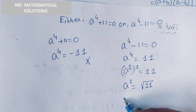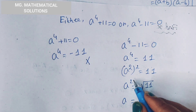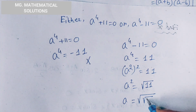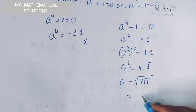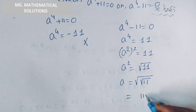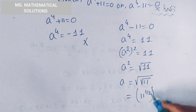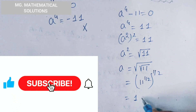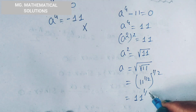So a equal to root over root over 11. Root over 11 means 11 to the power one-half, and root means another half. So a equals 11 to the power 1 over 4.